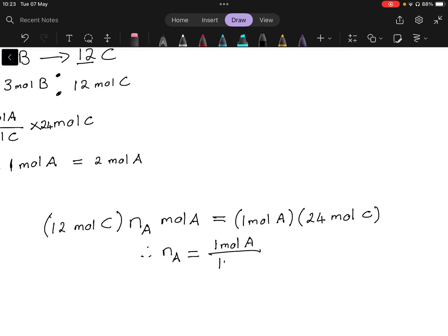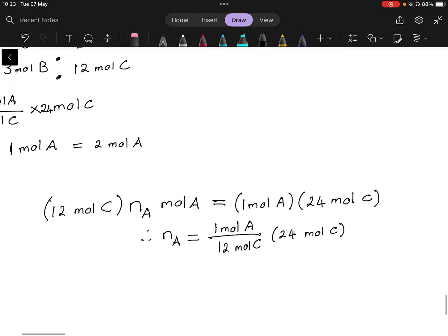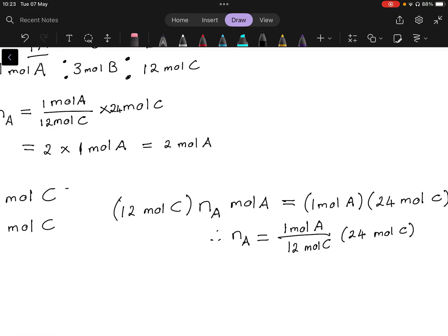So cross multiply to that side what do we get? We get 12 mole C times nA mole A, and on the right hand side you should get one mole A times 24 mole C. So one mole A times 24 mole C and we want nA to be alone. So then nA, you can drop the mole A because you'll see we put it on the other side just now, is equal to one mole of A divided by 12 mole C times 24 mole C.